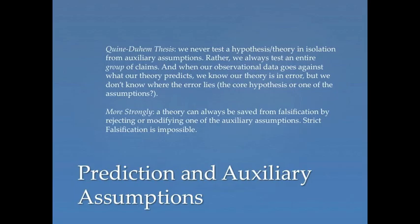So this leads us to the Quine-Duhem thesis. According to the Quine-Duhem thesis, we never test a hypothesis in isolation from auxiliary assumptions, or in isolation from other beliefs or commitments. Rather, we always test an entire group of claims. When our observational data goes against what our theory predicts, we know that our theory is in error. But we don't know exactly where the error lies. Is the problem with the core hypothesis itself, or is it with one of our other beliefs, one of our other assumptions that goes into yielding the prediction?